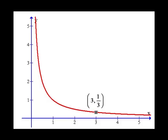In fact, our absolute minimum occurs at 3 and has a value of one-third. So 3 would be the location. The value would be one-third of our absolute minimum.